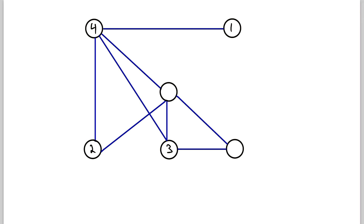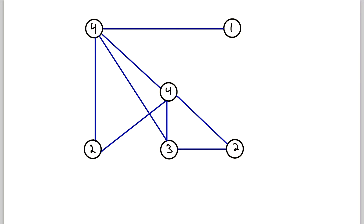This vertex here is incident with these two edges, so we'll put a two in there. And then this vertex here is incident with one, two, three, four edges, so we put a four in there. And if we look at this vertex again, we counted up the edges, but of course you could also count up the adjacent vertices — it's adjacent to this vertex, this vertex, this vertex, and this vertex. So it's adjacent to four vertices, and of course that gives us a degree of four.